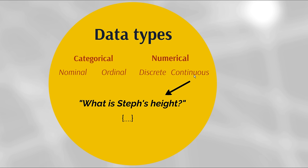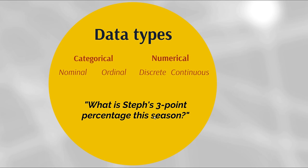Generally, we make height a discrete piece of data because we're only really interested in whole centimeters or whole inches. We don't usually care if someone's 6'3.5" or 6'3.2", but in a pure sense, height is continuous. Now here's an interesting question: if I asked what is Steph's three-point percentage this season, what kind of data do you think that is? Is it categorical or numerical, and which subcategory would it relate to?